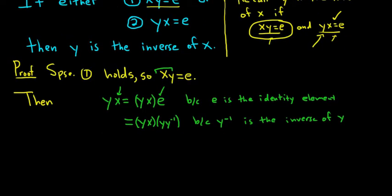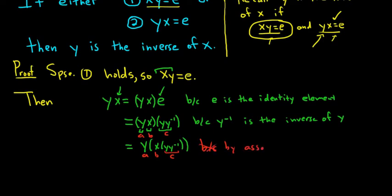Now we're going to use associativity very carefully. We're going to use it on these elements — x, y, and y⁻¹. This will be y times (x·y)·y⁻¹ by associativity. Let me clarify: if we label x as A, y as B, and y⁻¹ as C, then A·BC equals AB·C. Then we'll use associativity one more time, giving us y times (x·y·y⁻¹), by associativity.